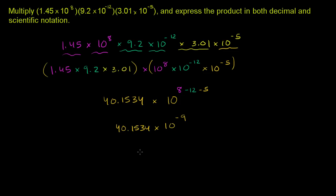Now, you might be tempted to say this is already in scientific notation because it's some number times a power of 10. But this is not quite official scientific notation. For proper scientific notation, the number in front must be greater than or equal to 1 and less than 10. Here we have 40.1534, which is obviously not less than 10 — it has two digits before the decimal.